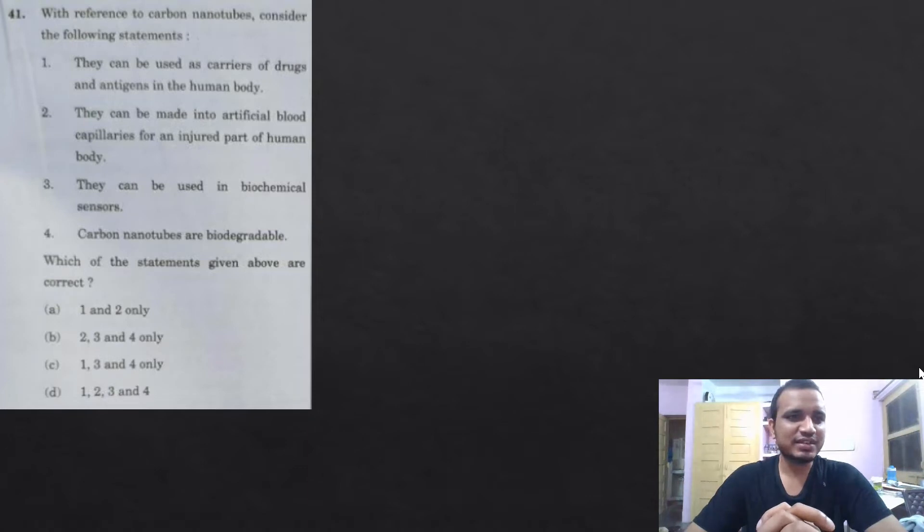See, you can relate this one. The first one is with reference to carbon nanotubes. Carbon nanotubes we hear all the time, like metallurgist. Consider the following statements: they can be used as carriers of drugs and antigens in the human body, they can be made into artificial blood capillaries for an injured part of human body, they can be used in biochemical sensors, carbon nanotubes are biodegradable.